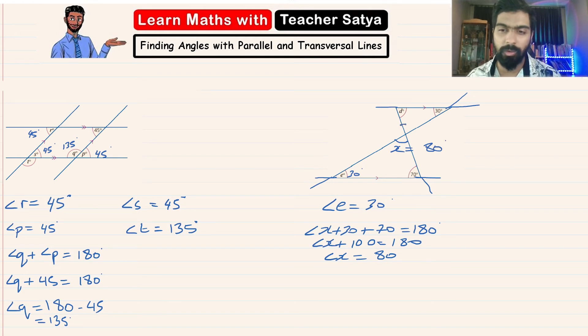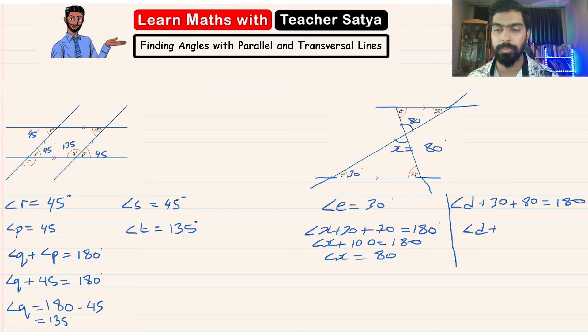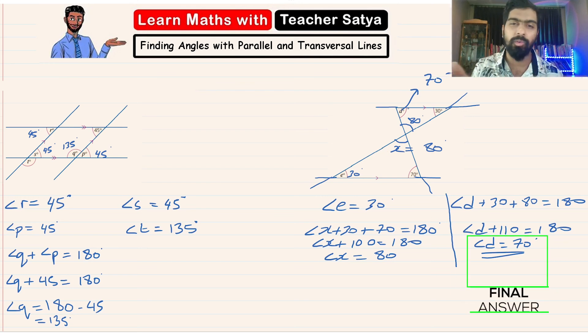Now we know that this angle will be vertically opposite to angle X, so this will also be 80 degrees. Now to find angle D, again use the sum of the angles in a triangle. So angle D plus 30 plus 80 equals 180. Angle D plus 110 equals 180. If we subtract both sides by 110, we get 70 degrees. So angle D equals 70 degrees. But we can also see that angle D is also the alternate angle to angle 70 degrees. So whichever method you use, the final answer would be the same.